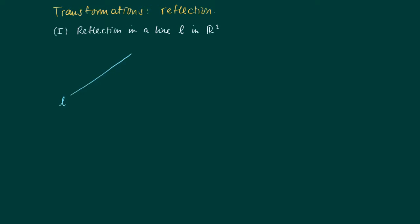Consider the reflection in the line L in R². Here we have the line L, and suppose it goes through the origin. Then the parametric description of the line is: vector x equals t times the vector u, where u is the direction vector of this line. Assume that u is a normalized vector such that its length is 1.